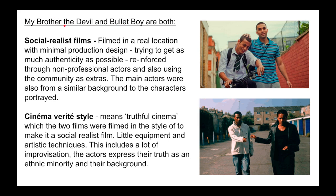We are going to start off with comparing. Both films are social realist films, filmed in a real location with minimal production design as they are independent films. They try to show as much authenticity as possible, reinforced through non-professional actors who also use the community as extras, such as extras from Hackney's flats. The main actors were also from a similar background to the characters portrayed, such as Muslims and Egyptians. They are also both filmed in a cinema verite style — meaning truthful cinema — trying to show the reality of society and expose the truth, unlike Hollywood films filled with special effects. They use little equipment and artistic techniques, with a lot of improvisation, and the actors express their truth as an ethnic minority.